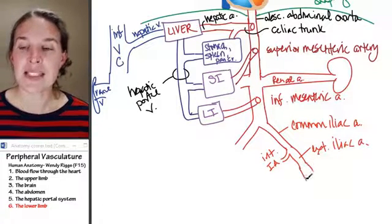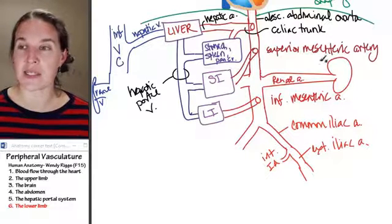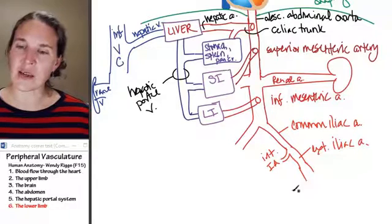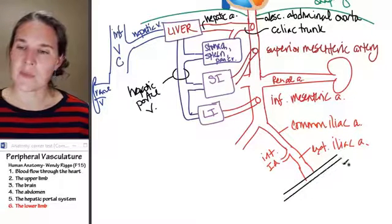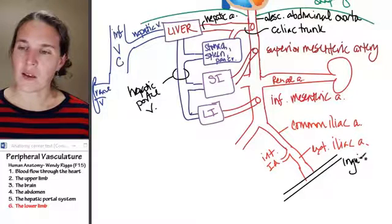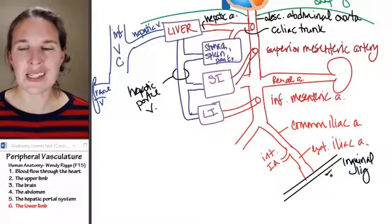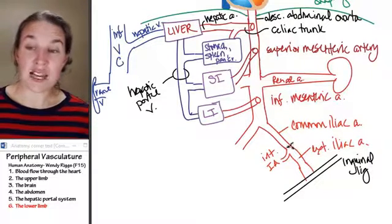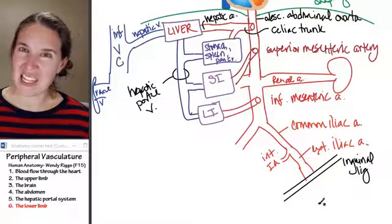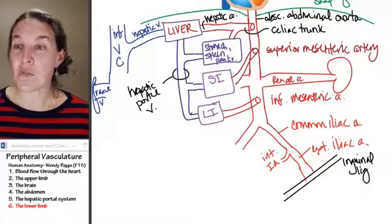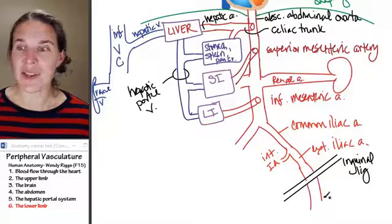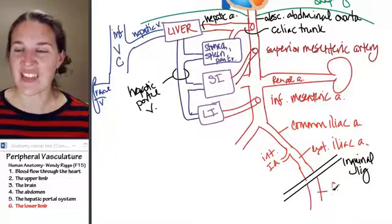It actually passes beneath a structure called the inguinal ligament, and I think I was doing anatomical structures in black. This inguinal ligament is sort of, we'll see it. The external iliac artery passes beneath that, and once it emerges on the other side, of course, it has a new name. And its new name, super easy, the femoral artery.